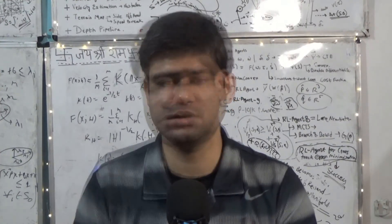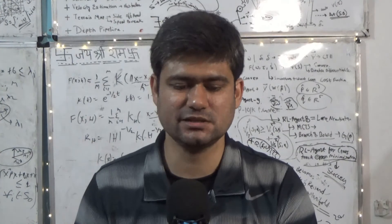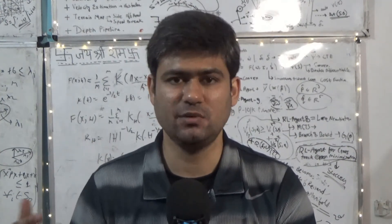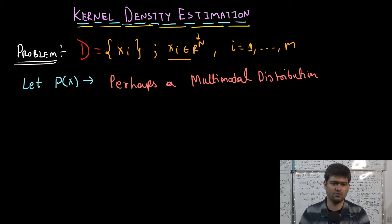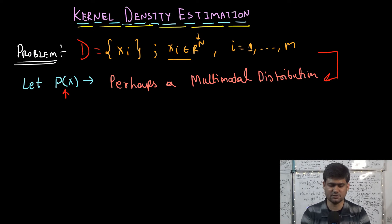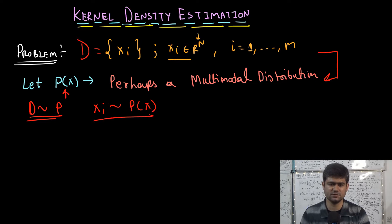We can assume it is a unimodal distribution as well, which further simplifies the discussion, but for the sake of generality we will assume that p of x is a multimodal distribution. Let's assume that the dataset is sampled according to this distribution p of x, that is, p of x generated all these m data points — we sampled these m data points from this multimodal distribution.